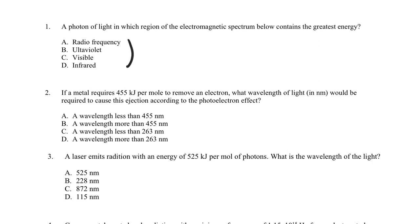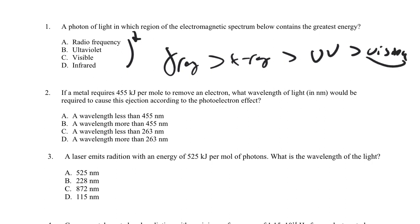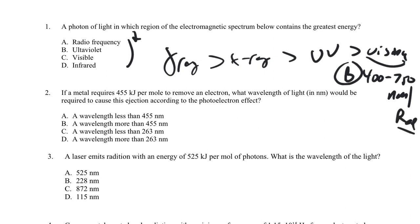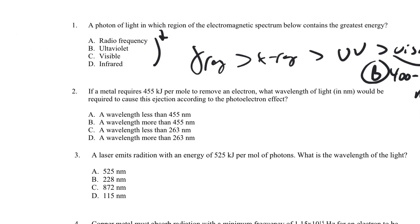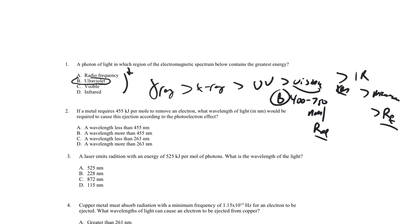Radio frequency is the lowest energy. The order from highest to lowest is: gamma ray, greater than X-ray, greater than UV, greater than visible. Visible is approximately 400 to 750 nanometers — 400 being the blue side and 750 the red side. Below visible we have infrared, then microwave, then radio frequency. Among the answer choices, ultraviolet would be the highest energy. For wavelengths just above 750 nm, that's the infrared region.